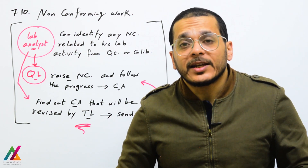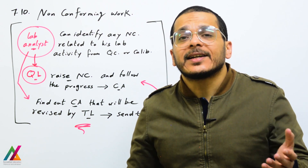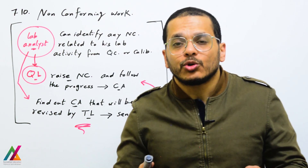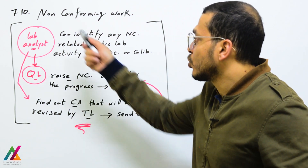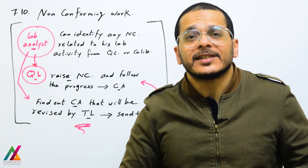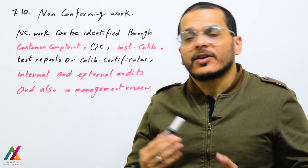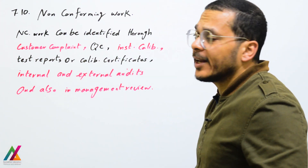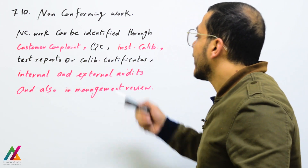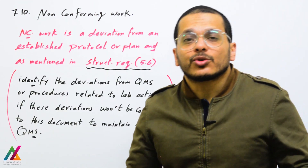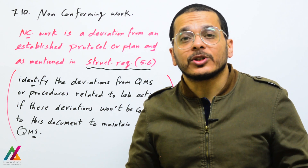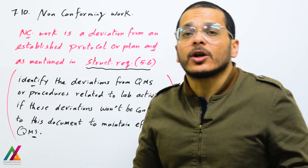Non-conformity can also be raised during an internal audit by the quality lead or during an external audit by the accreditation body. In both cases, the same process shall be followed. Non-conforming work can be identified through customer complaints, quality control results, calibration, initial calibration, test reports or calibration certificates, internal and external audits, and also during annual management review.